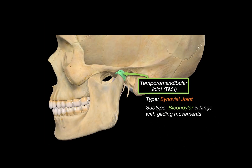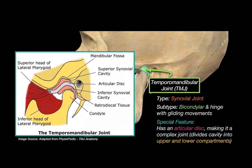That coordination is what makes you able to move your jaw easily. The TMJ has an articular disc that divides the synovial cavity into two compartments, making it a complex joint. This diagram shows the articular disc dividing the joint into a superior synovial cavity and an inferior synovial cavity.